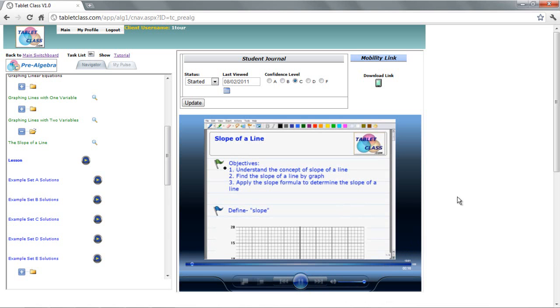of a particular line. Then we're going to learn the slope formula and determine the slope of a line by using two coordinates that are on that line.